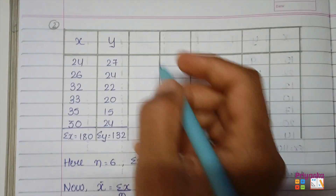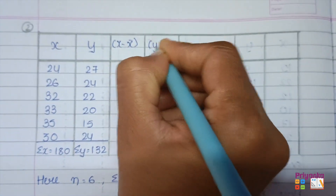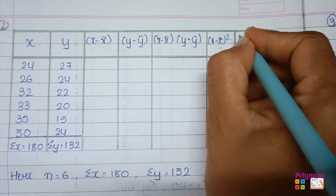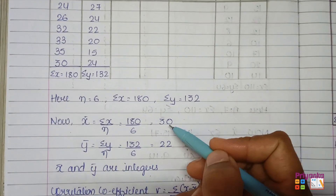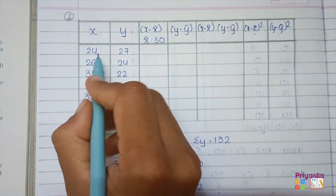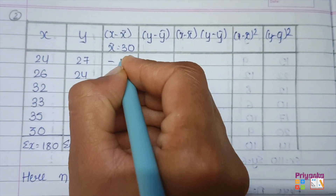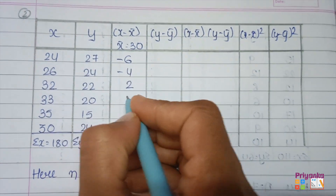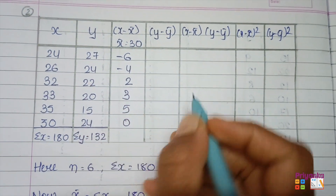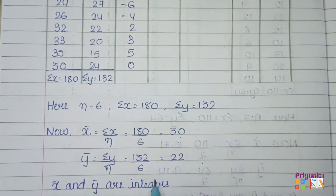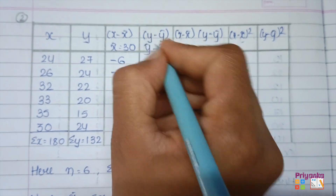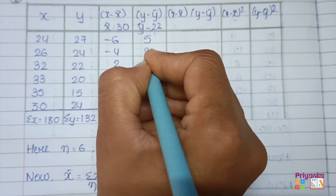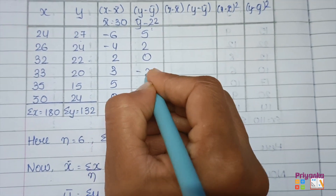We prepare the columns: (x − x̄), (y − ȳ), (x − x̄)(y − ȳ), (x − x̄)², and (y − ȳ)². With x̄ = 30: 24 − 30 = −6, 26 − 30 = −4, 32 − 30 = 2, and so on. With ȳ = 22: 27 − 22 = 5, 24 − 22 = 2, 22 − 22 = 0, 20 − 22 = −2, and so on.